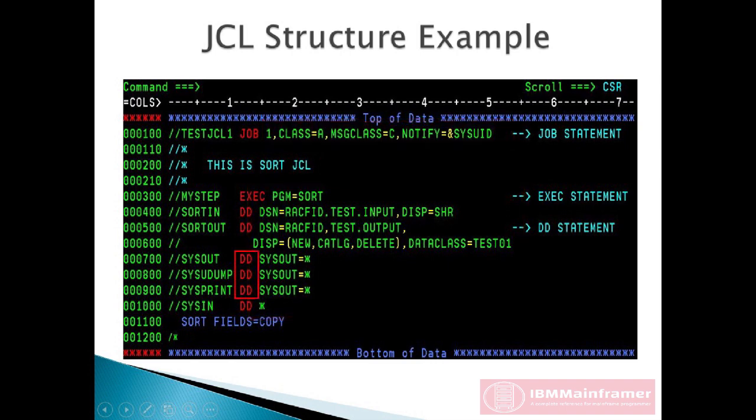We also have a few DD statements down here, which tell JAS what to do with the output of the job itself. Sysind DD asterisks, this is the area where we send additional commands to the program. Here we added sortFields equals copy, that means telling ZOS to copy the data in sortN DD file into the sort2 DD file.